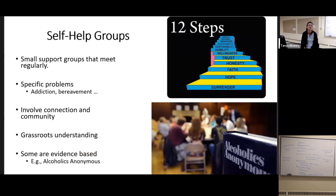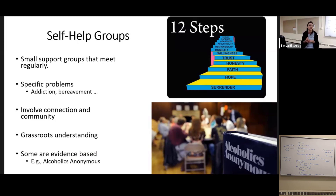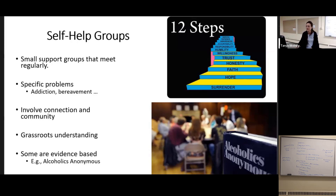Then there are self-help groups — small support groups that meet regularly, tending to focus on specific issues like addiction or bereavement. A benefit is that they involve connection and community, and a lot of these are built out of grassroots understanding of problems. Alcoholics Anonymous is as effective as interventions for alcohol use disorders given by licensed psychologists and experts — it comes from people with that condition themselves thinking about their experiences and what they need, and that's pretty powerful.